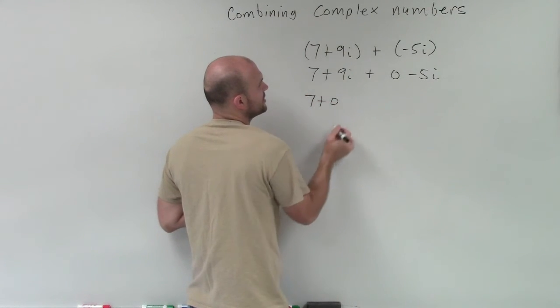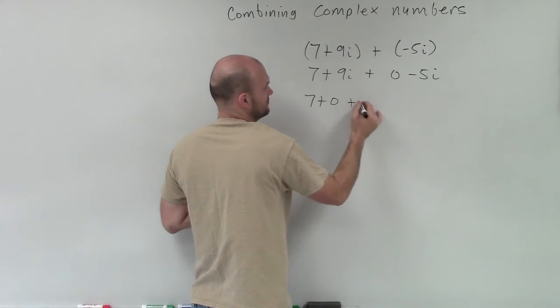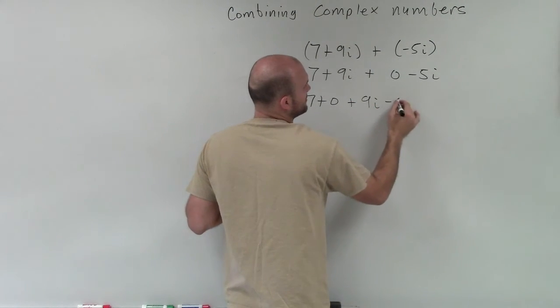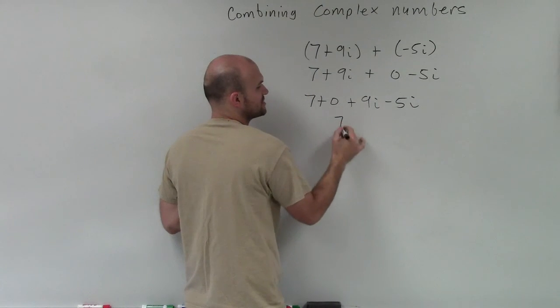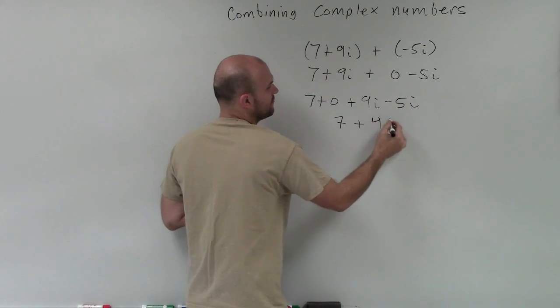So I have 7 plus 0, and then I combine 9i plus a negative 5i. So it's a positive 9i plus a negative 5i, which you could just write as minus 5i. Well, 7 plus 0 is just giving me 7, plus 9i minus 5i is 4i.